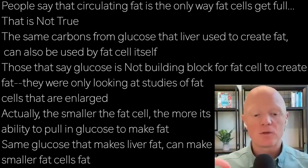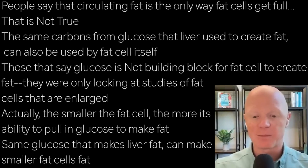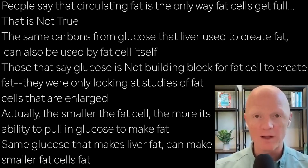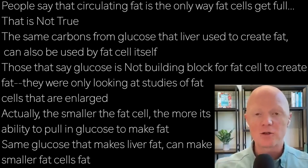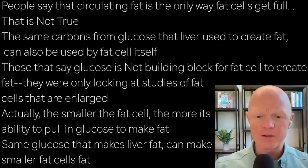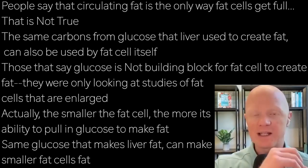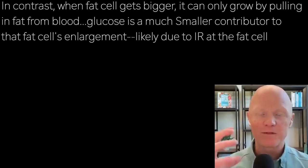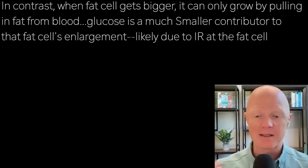Some people focus only on circulating fat as the way fat cells get big, but that is absolutely not true. The same glucose carbon building blocks the liver uses to create fat, the fat cell can use as well. Some confusion has arisen from influencers citing studies that only looked at enlarged fat cells. It appears that the smaller the fat cell, the more it is able to pull in glucose and turn it into fat. So the same glucose making the liver fat can also be making smaller fat cells fat. In contrast, when the fat cell is already enlarged, glucose is a much more modest contributor.